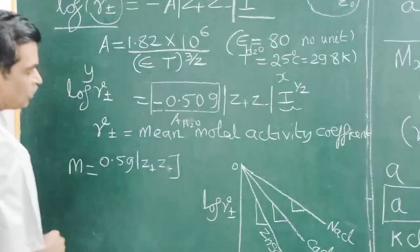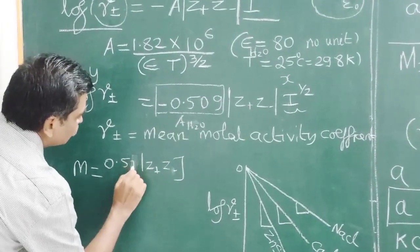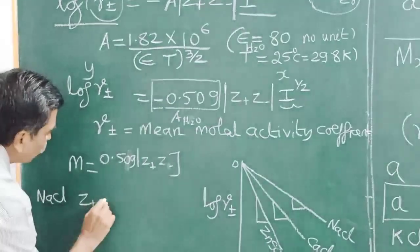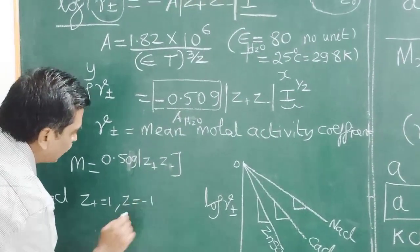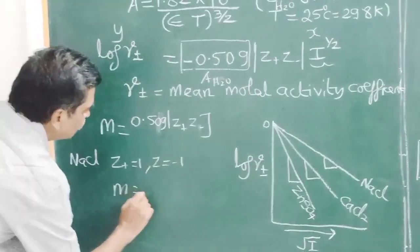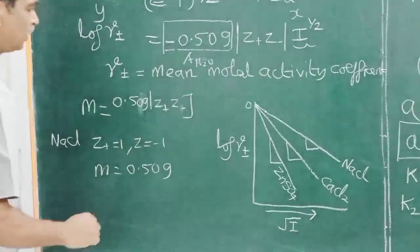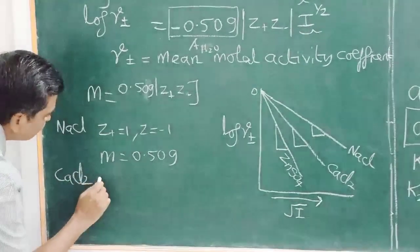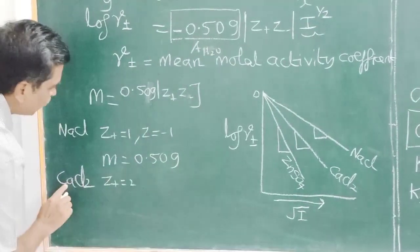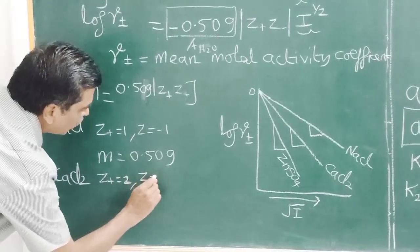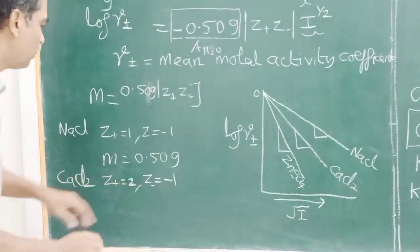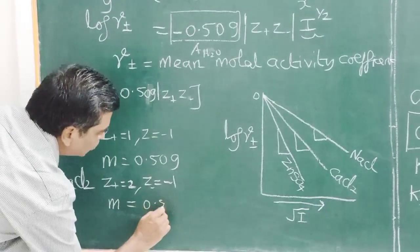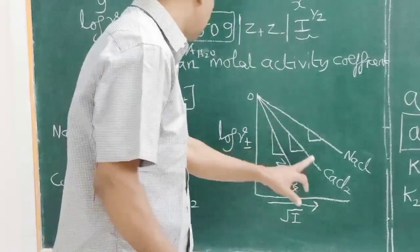The slope is nothing but 0.509 × |z₊z₋|. For sodium chloride, z₊ = +1 and z₋ = −1, so the slope is 0.509 × 1 = 0.509. For calcium chloride, z₊ = +2 and z₋ = −1, so the slope is 0.509 × 2, making it steeper.